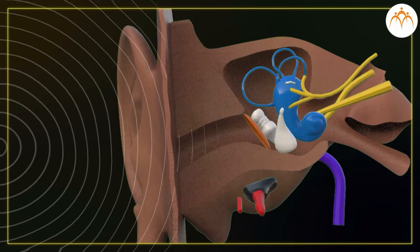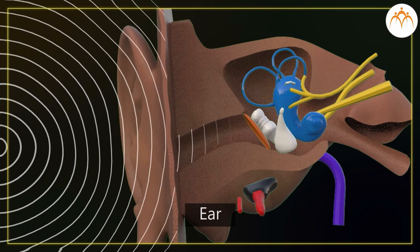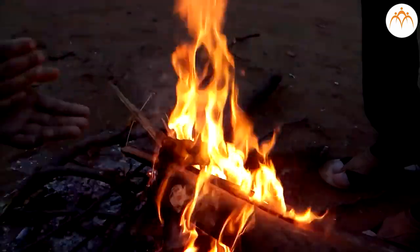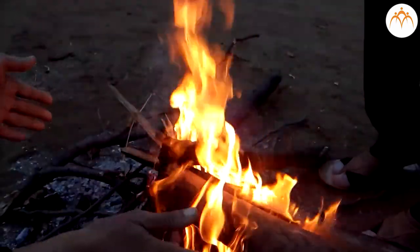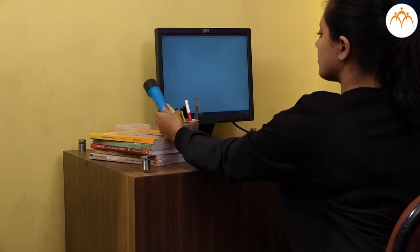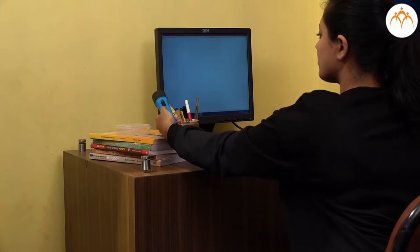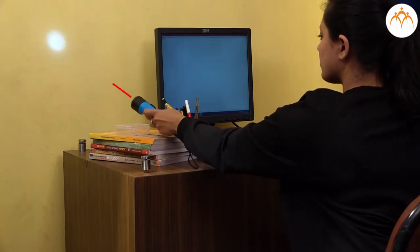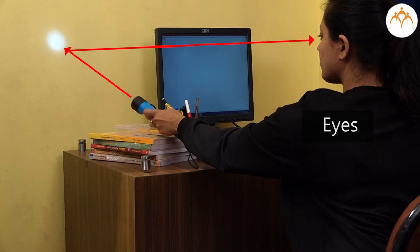We hear sound energy with our ears. We feel heat energy with our nerves. We see objects around us with the help of light energy with our eyes. It helps us to see everything around us.